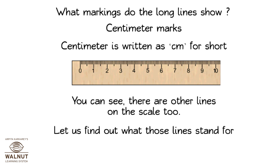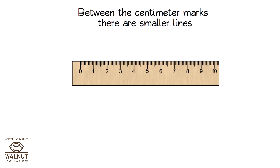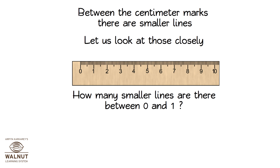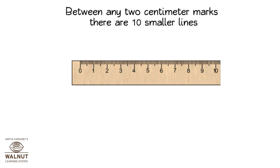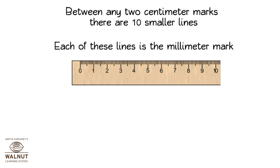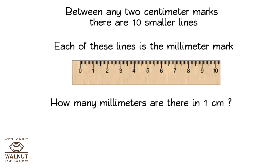Let us find out what those lines stand for. Between the centimeter marks there are smaller lines. How many smaller lines are there between zero and one? There are 10 lines. How many smaller lines are there between three and four? There are 10 lines. Between any two centimeter marks there are 10 smaller lines. Each of these lines is the millimeter mark.